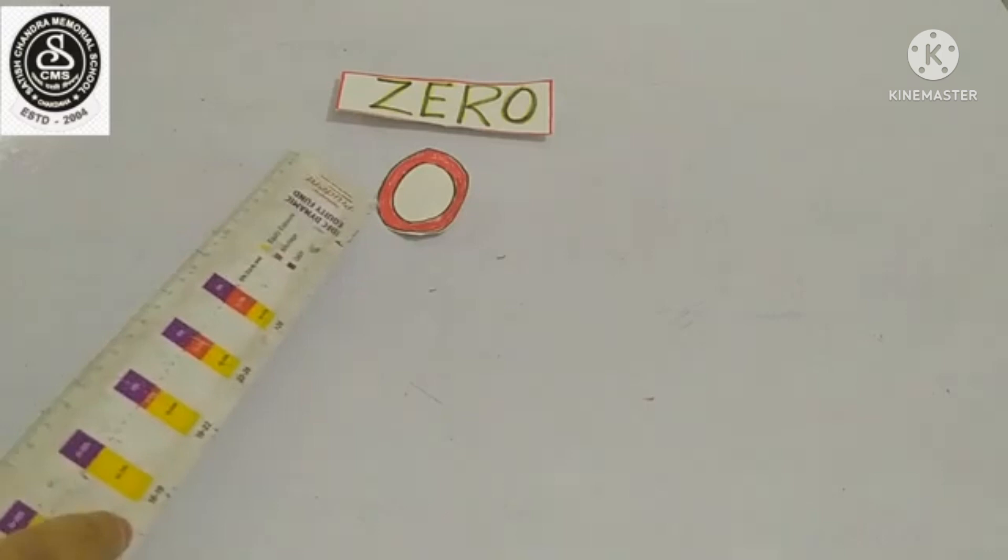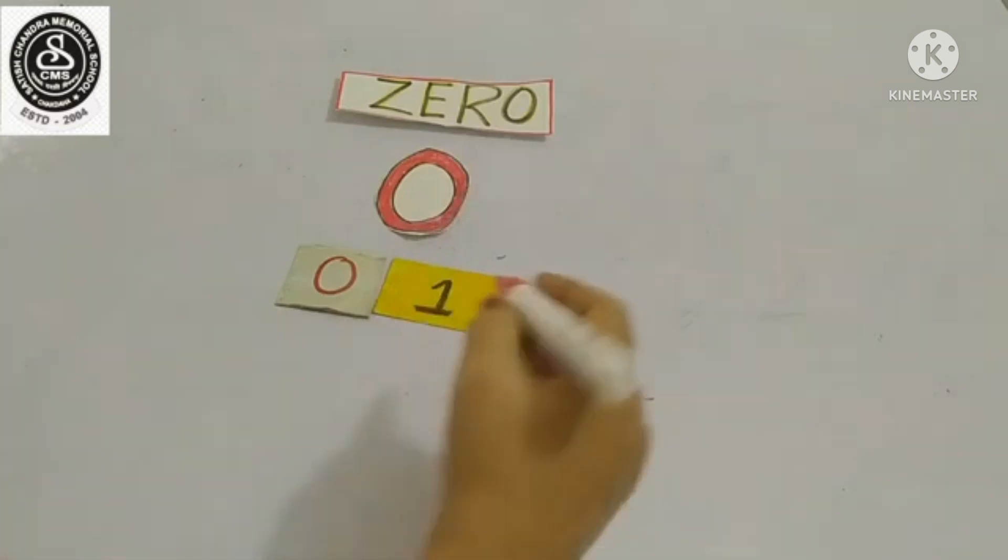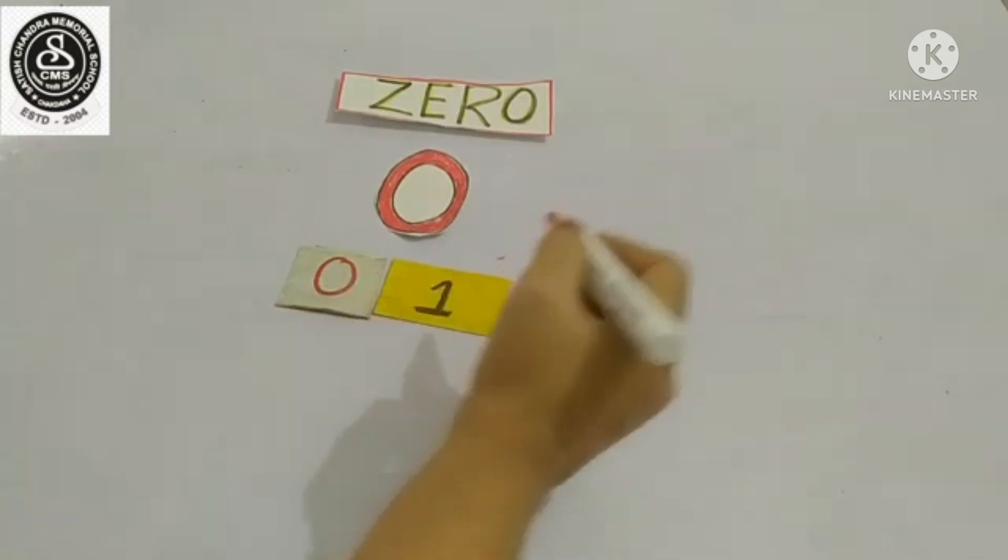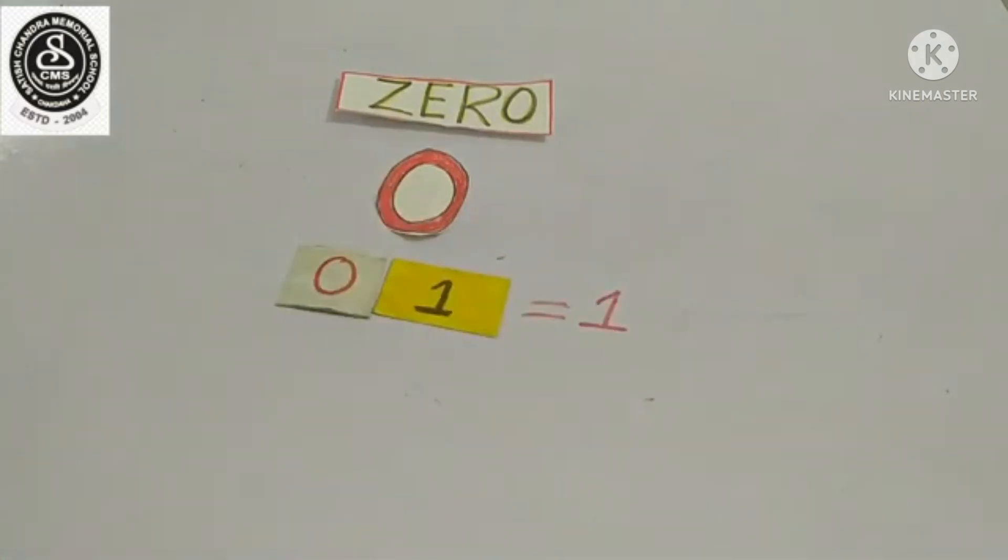So, zero. Here, you can see zero. Zero means nothing. So, when zero is placed before any number, it does not increase the value of that number. That means, here, zero one equals only one. Understood?